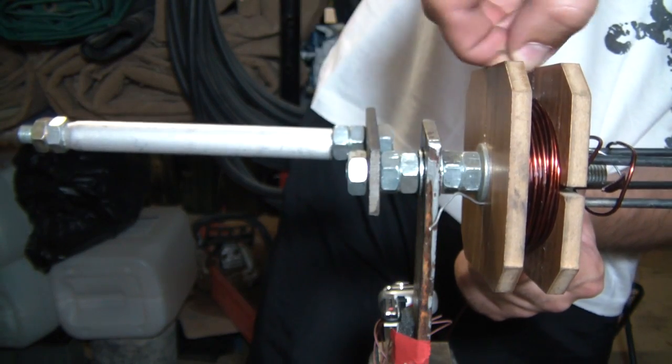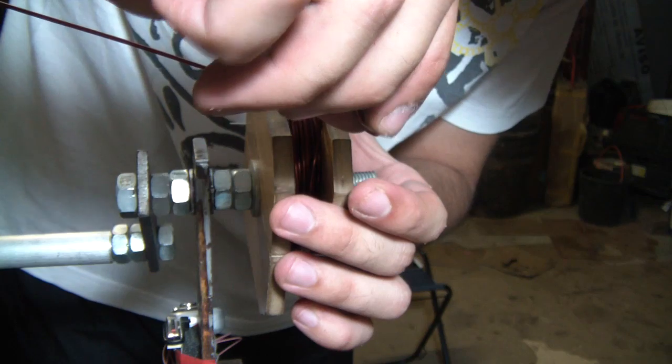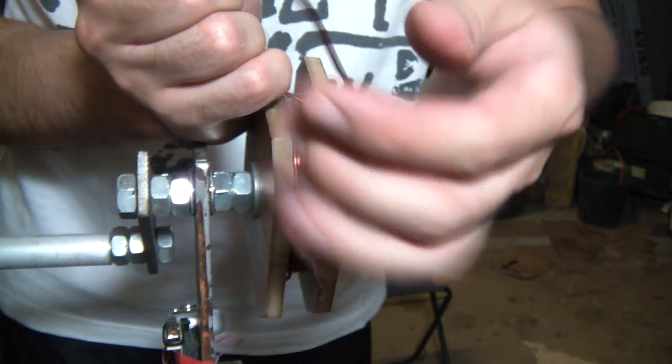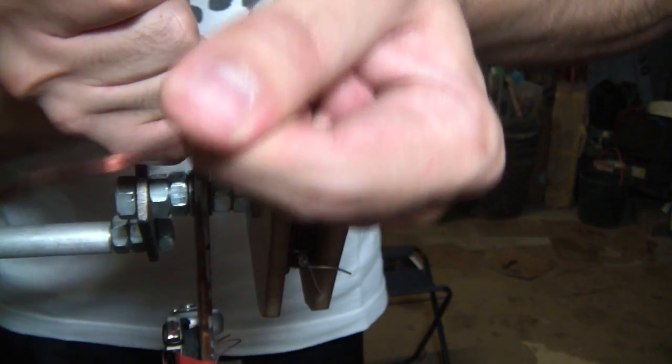At the end of the winding process I twisted the wires I talked about earlier, the silver ones, together. I also twisted the beginning and the end of the coil together.